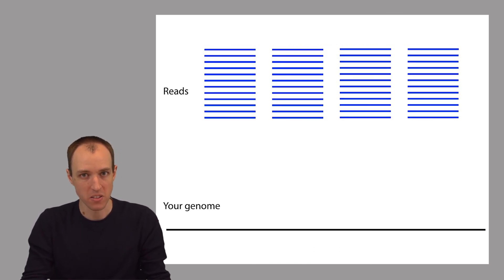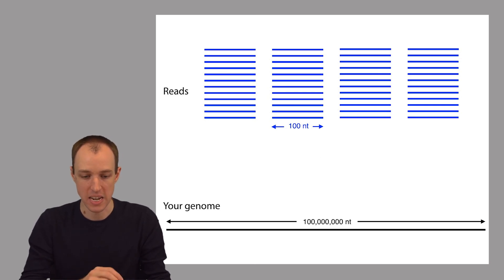But massively parallel sequencers, or these second generation sequencers, produce reads that are closer to about a hundred and fifty or a couple hundred bases long or so. So these reads are many orders of magnitude shorter than the input DNA.